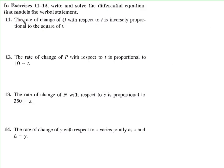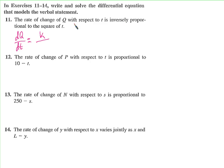Next: write and solve a differential equation that models a verbal statement. Interpreting verbal statements is a useful skill for the AP test. 'The rate of change of q with respect to t' means dq/dt; 'inversely proportional to the square of t' means it equals a constant k divided by t squared. Inversely proportional means k divided by the variable; proportional means k times something.